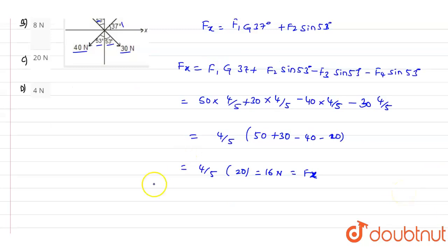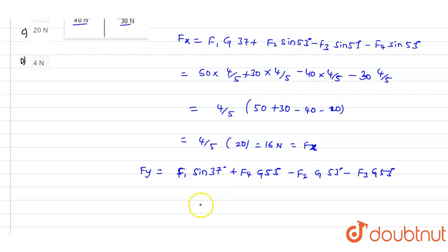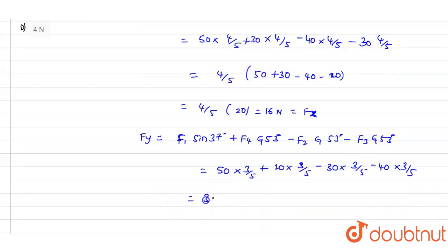Now we need to find the Fy value as well. Fy = F1·sin37° + F4·cos53° − F2·cos53° − F3·cos53°. Simplifying: Fy = 50×(3/5) + 20×(3/5) − 30×(3/5) − 40×(3/5).